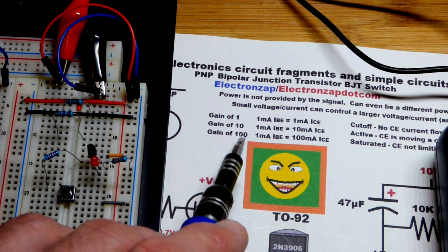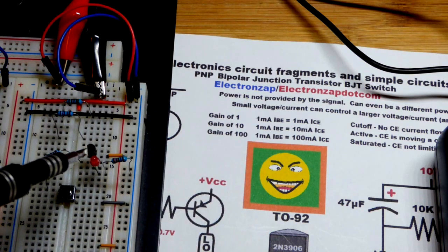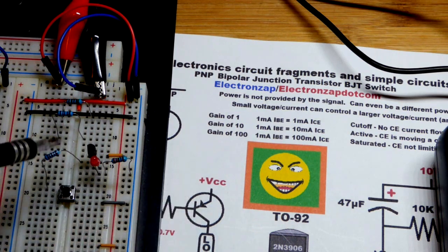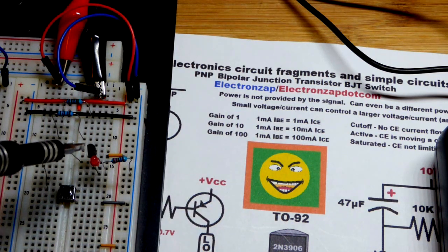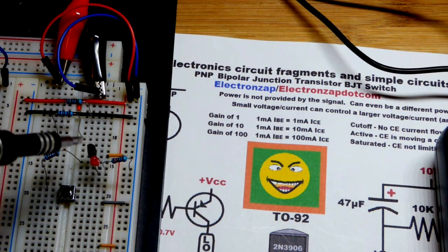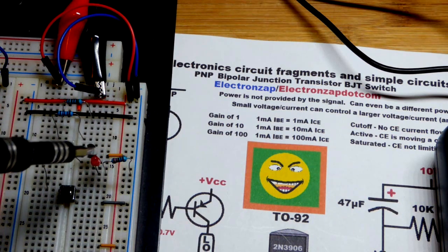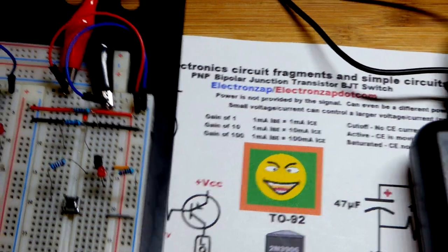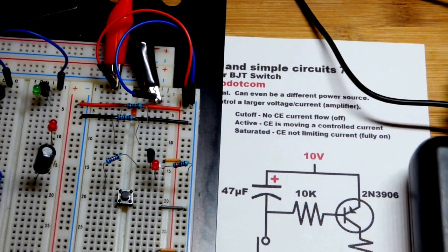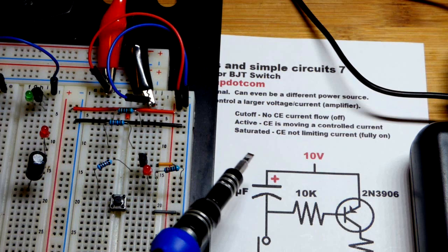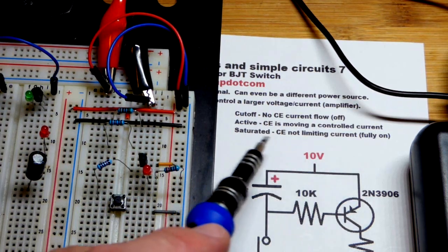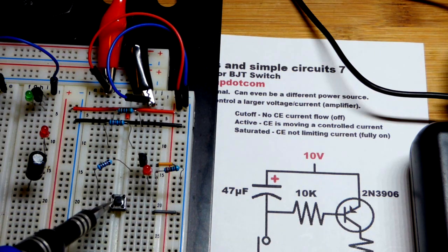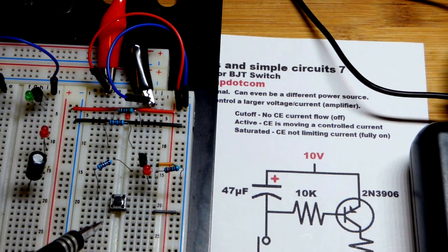With a gain of 100, if you give the base 1 milliamp of current, you can expect 100 milliamps. You want to give the base probably 100 or 200ths the current that you need from the rest of the load. As long as you go overboard, you will get what is called saturation.